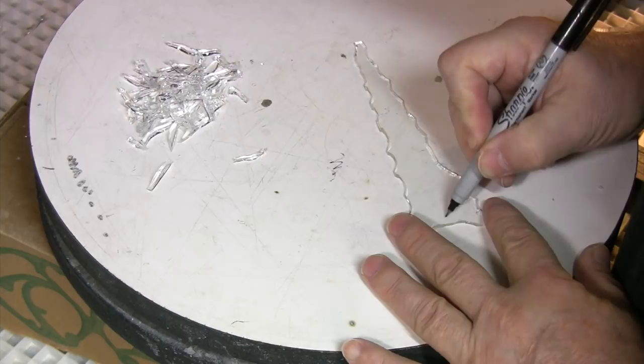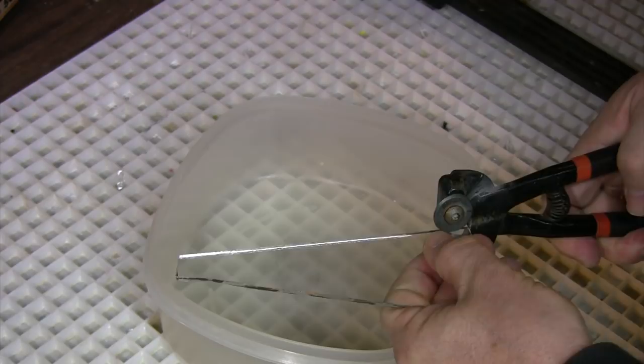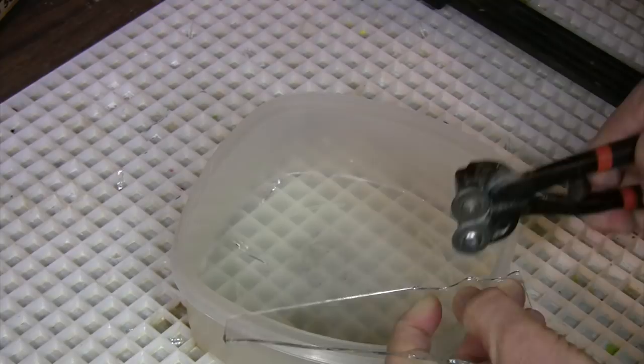I'll just draw a quick center line for reference. Now let's nip up some tree branches. A scrap piece of glass with one straight edge. I'll start by just nipping little crescents up that edge.